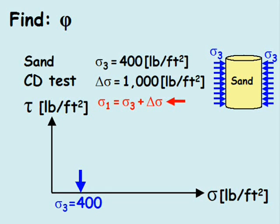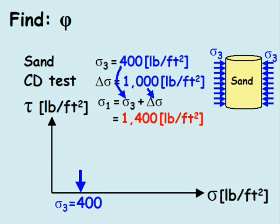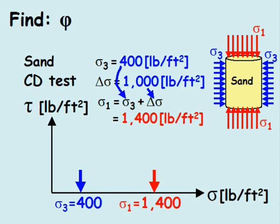The axial stress at failure is the confining stress at failure plus the deviator stress at failure. The values are plugged in, and our axial stress at failure is 1400 pounds per square feet, and added to the plot.